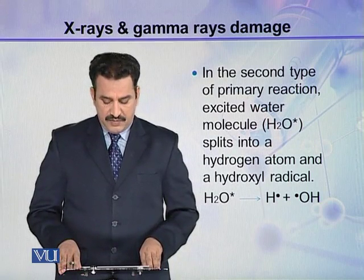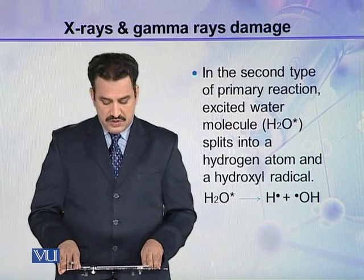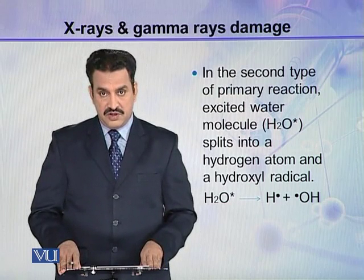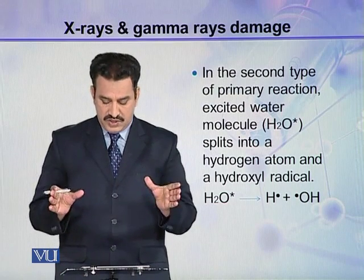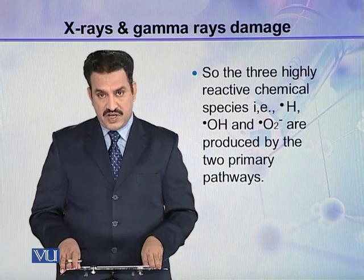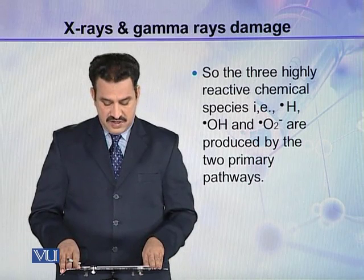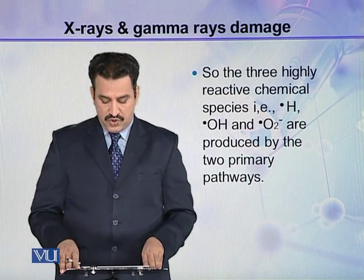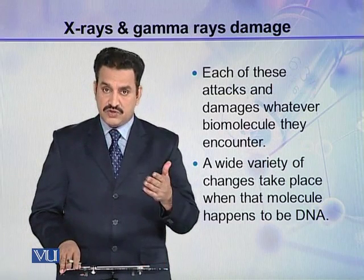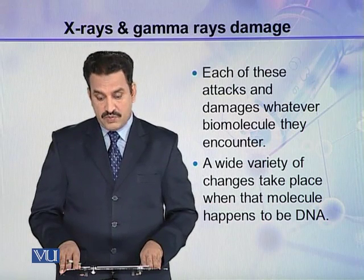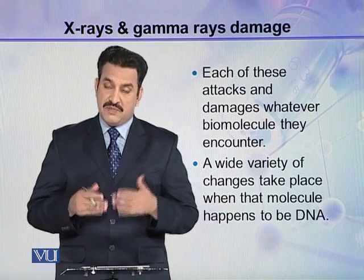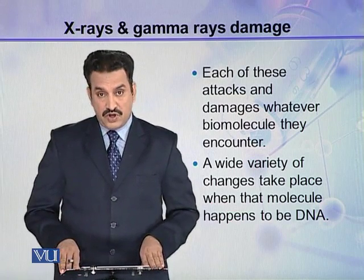In the second type of primary reaction, the excited water molecule splits into a hydrogen atom and a hydroxyl radical — simply broken into its components H and OH. The three highly reactive chemical species produced by these two primary pathways — a proton or hydrogen atom, a hydroxyl radical, and a superoxide — each attack and damage whatever biomolecule they encounter. If that molecule happens to be DNA, it causes a wide variety of damages and changes to the DNA molecule.